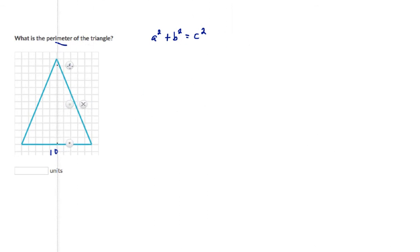Now this is called an isosceles triangle because two of the side lengths are the same. But when we split this isosceles triangle in half, what we've done is created two right triangles. What we're going to do is draw one of those right triangles off to the side.